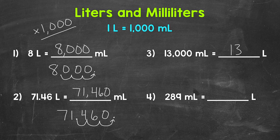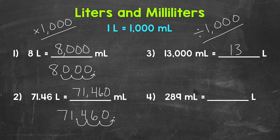13,000 milliliters equals 13 liters. When we go from milliliters to liters, we divide by 1,000. Let's move on to number four, where we have 289 milliliters equals how many liters. Milliliters to liters — we divide by 1,000. This number isn't as easy to work with as 13,000 in number three; we used mental math for that. For number four, what we can do is move the decimal three times to the left.